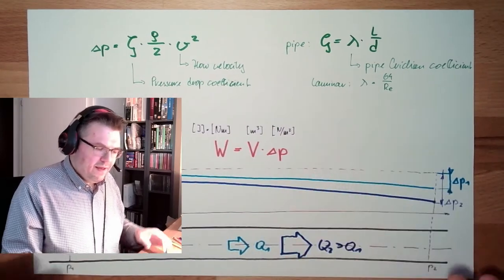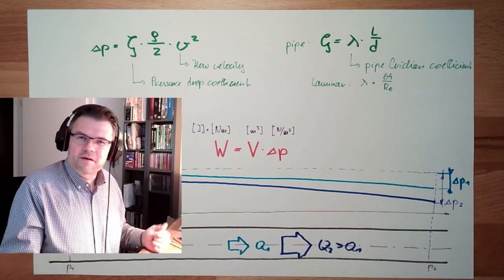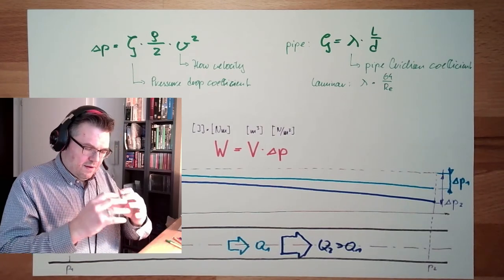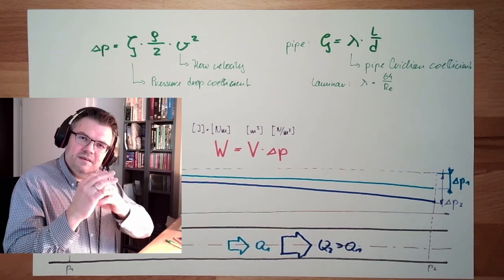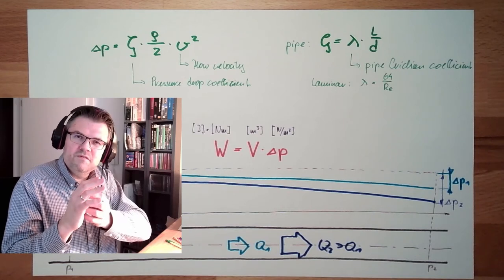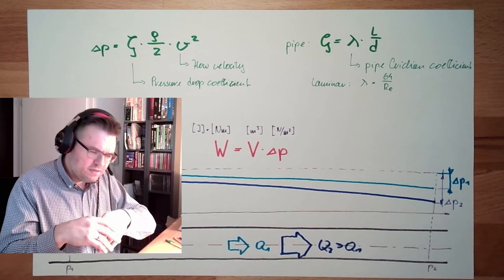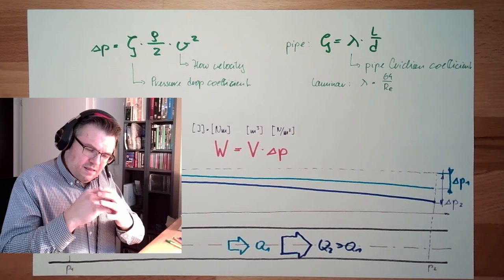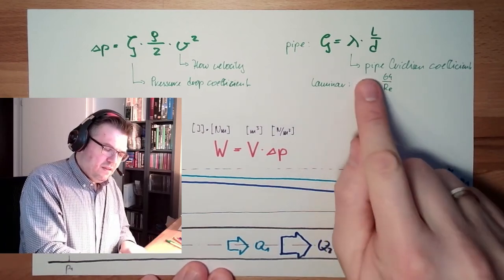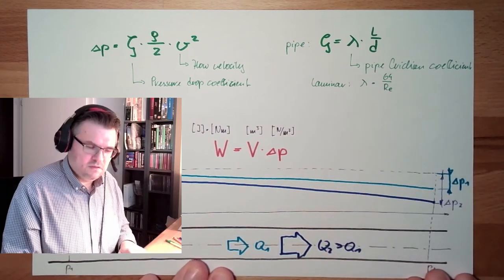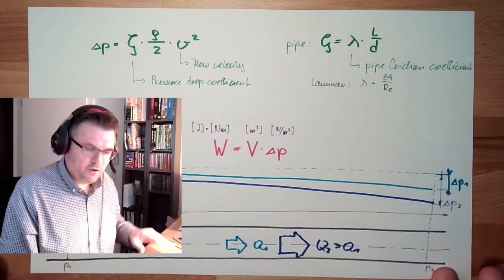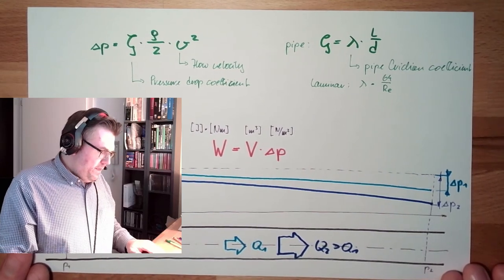And if it's turbulent, you have to go into a diagram. And then it strongly depends on the roughness of the surface. If it's a very smooth surface inside the tube, or if it's rough, if it's concrete, or if it's metal, or if it's rubber. This depends on the roughness or smoothness of the surface inside. And this gives them different lambda values, resulting then in a pressure drop. This is for pipes.